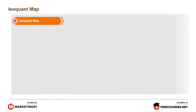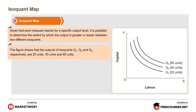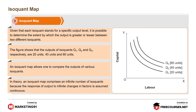Moving on to the Isoquant Map. Given that each isoquant stands for a specific output level, it is possible to determine the extent by which output is greater or lesser between two different isoquants. The figure shows the outputs of isoquants Q1, Q2 and Q3 are 20 units, 40 units and 60 units respectively. An isoquant map allows one to compare the outputs of various isoquants. In theory, an isoquant map comprises an infinite number of isoquants because the response of output to infinite changes in factors is assumed continuous.